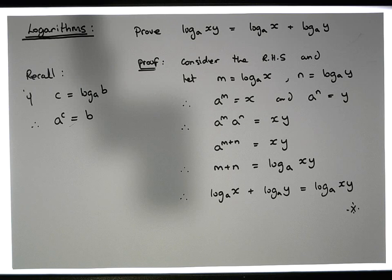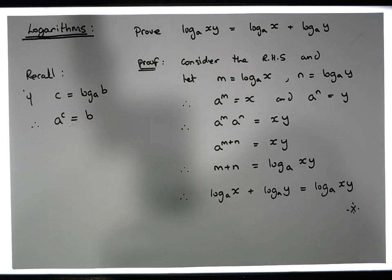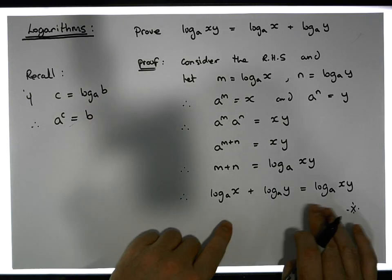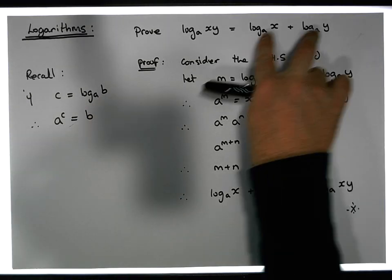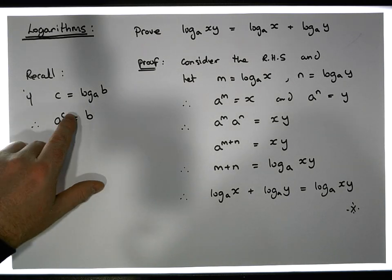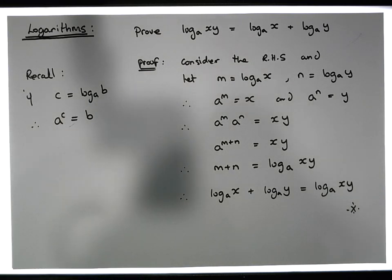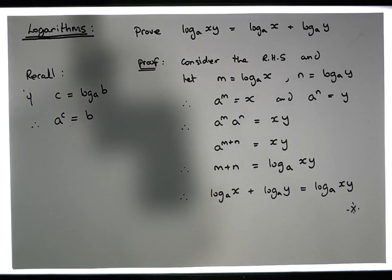That's our first proof — a straightforward and nice proof to build up your skills with respect to working with logarithms and understanding where these identities come from and why they work. This was Jonathan Lambert with the Mathematics Development and Support Service at the National College of Ireland. Thanks for watching!